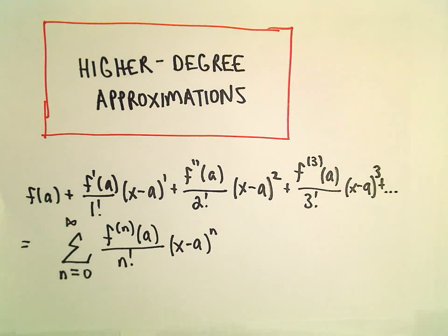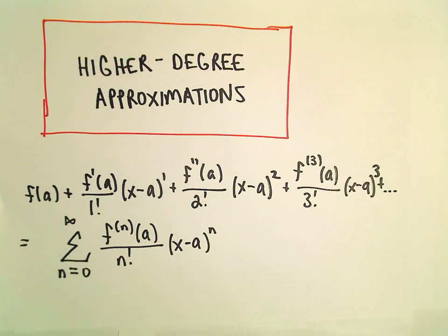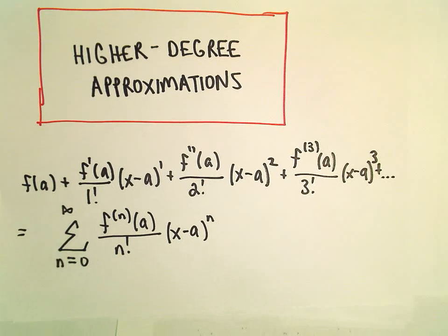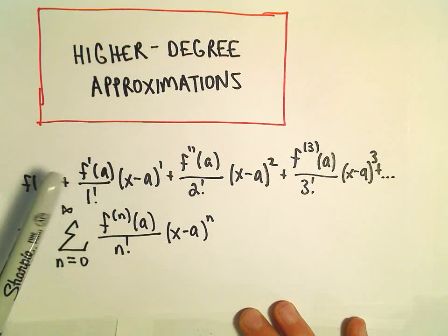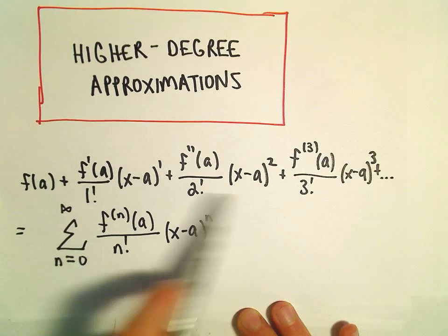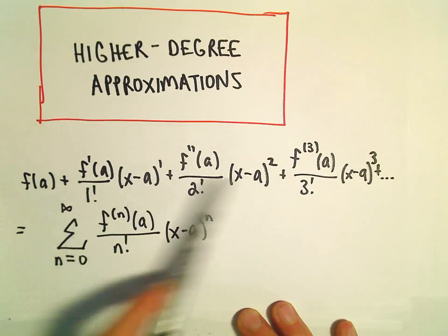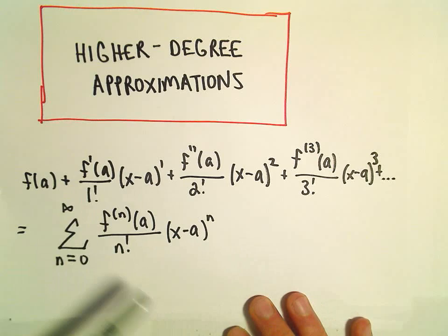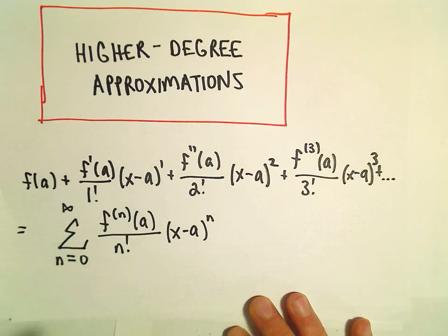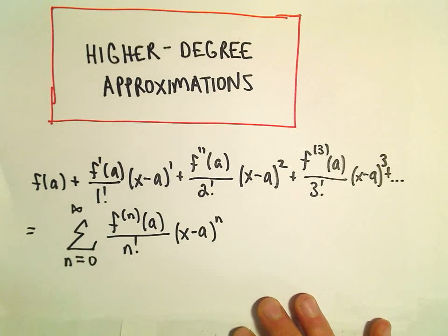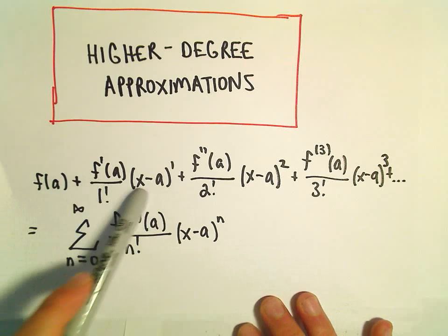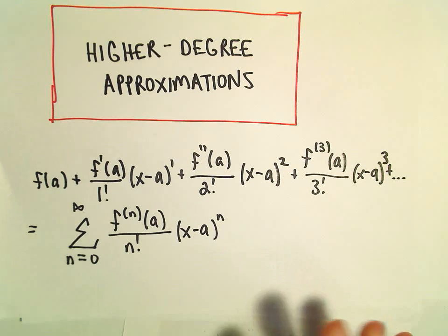Alright, in this video we're going to look at some higher degree approximations for functions. In certain cases we can approximate functions with an infinite sum of functions, an infinite polynomial. It's given by the following formula. We're going to find some higher degree approximations just by using finitely many terms.